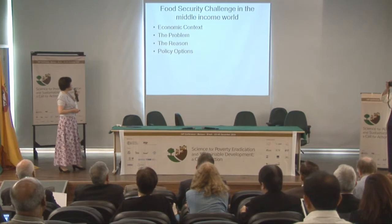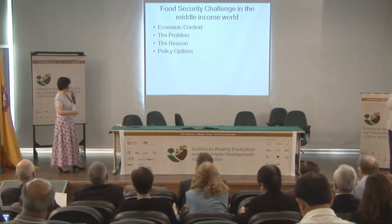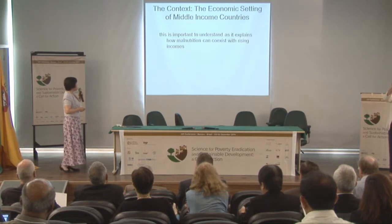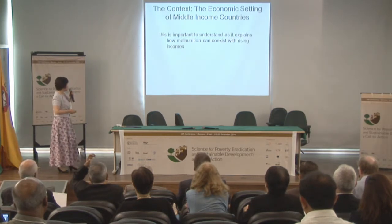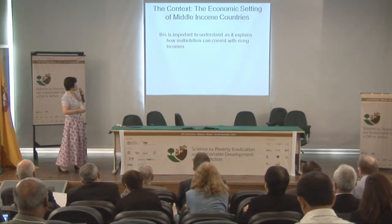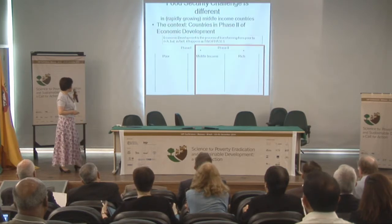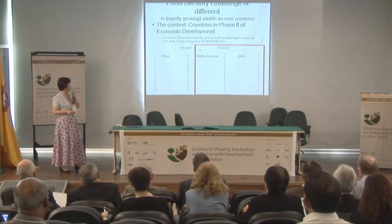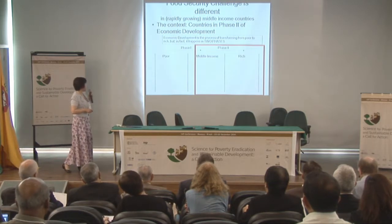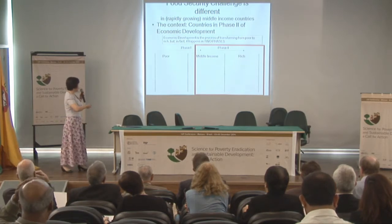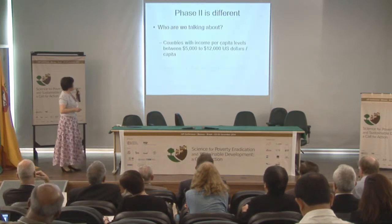The food security challenge in the middle-income world—from an economic context—is a new problem with different reasons and policy options. This economic setting is important to understand why malnutrition and obesity can co-exist alongside rising incomes. Economic development in the process of transforming from poor to rich happens in two phases. The second phase—moving from middle-income to high-income—is much more difficult.